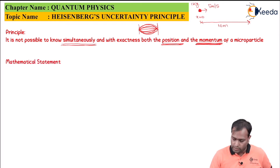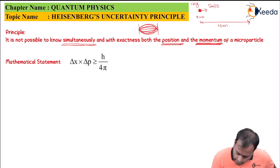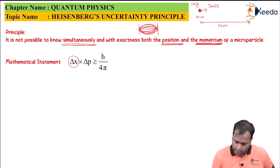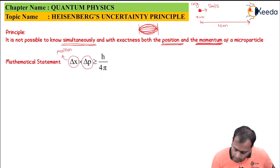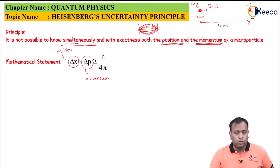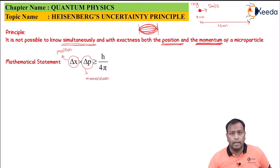The mathematical statement of this is: Δx × Δp ≥ h / 4π, where h is Planck's constant, Δx is the uncertainty in position, and Δp is the uncertainty in momentum.